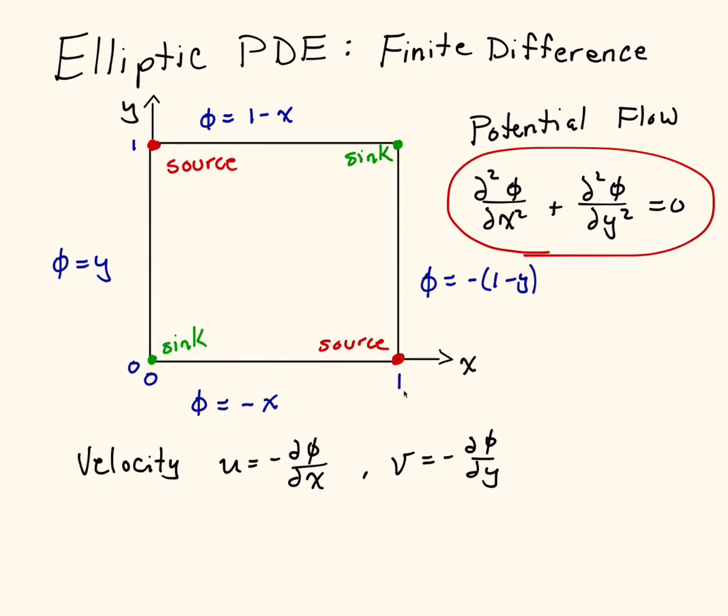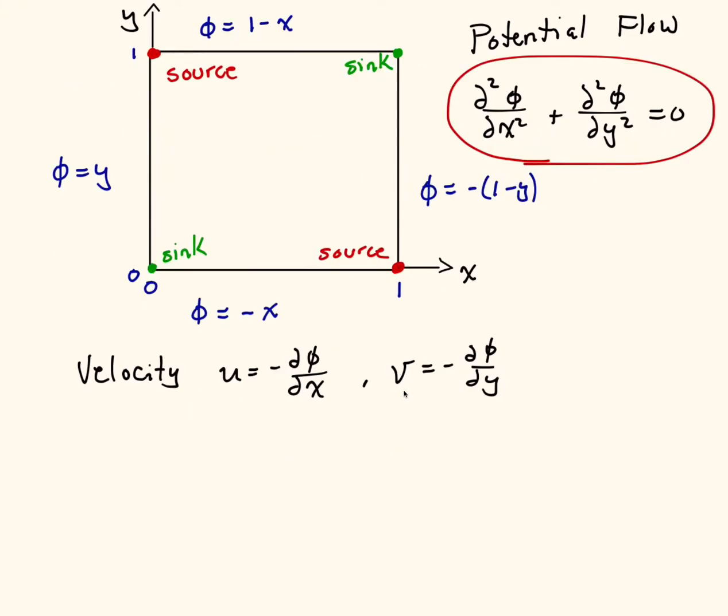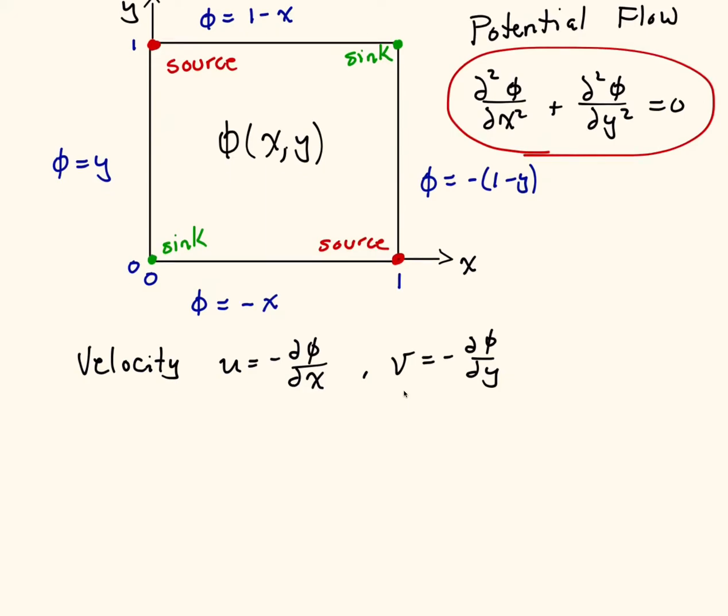Once we solve for φ in the middle of the domain, for example in the middle here, once we know φ as a function of x and y, that's really the goal. Then we can take partial derivatives of φ to get the velocity field. So u is the x component of velocity and v is the y component of velocity, and we can solve for those once we have the potential.